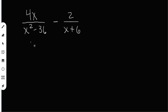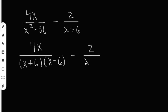Well, we can keep the 4x on top the same, and we can factor the bottom into x plus 6 and x minus 6. On the other side, I have 2 divided by x plus 6.